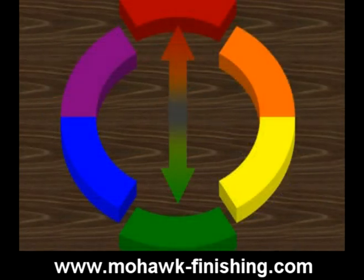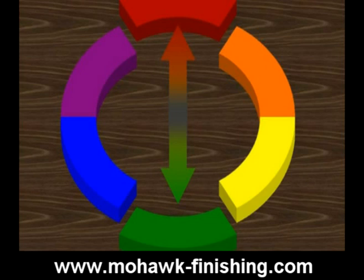Sometimes it's easier to match colors by working with the complementary colors. Complementary colors are located directly opposite each other on the color wheel. For example, the opposite of red is green, so green and red are complementary colors.